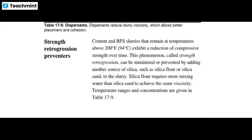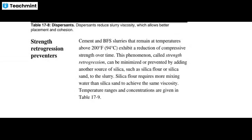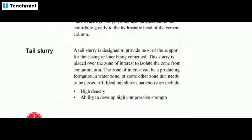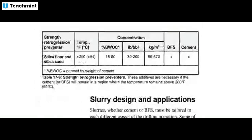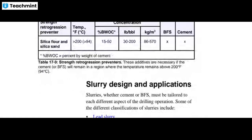Cement and BFS slurries that remain at temperatures above 94°C exhibit a reduction in compressive strength over time. This phenomenon is called strength retrogression, which can be minimized or prevented by adding another source of silica, such as silica flour or silica sand, to the slurry. Silica flour requires more mixing water than silica sand to achieve the same viscosity. Concentration and temperature ranges are given in the table.